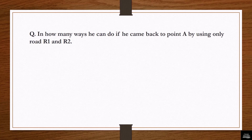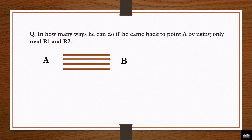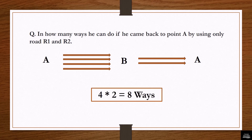The next question: in how many ways can he travel if he came back to point A using only road R1 or R2? The solution is: the number of ways from A to B is 4 because there is no constraint on that part. But while coming back, he has only two roads — R1 and R2 — so the number of ways returning is 2. Multiplying gives 4 × 2 = 8 ways.